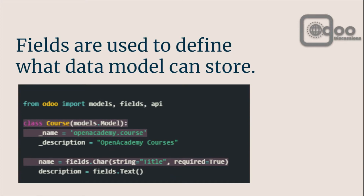There are certain fields — what is the purpose of a model? Inside the model we store data, and data can be of different types like date, text, name, and boolean values. Inside the model we define different fields to store different kinds of data. Fields are used to define what kind of data the model can store and where it will be stored. For example: name equals fields.Char with string='Title'.